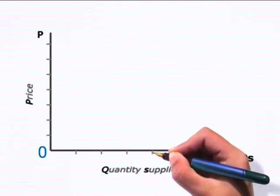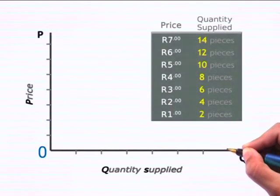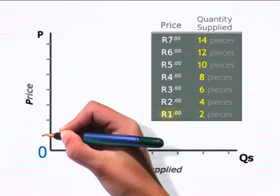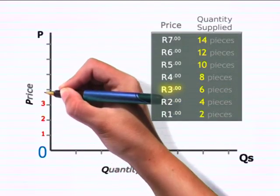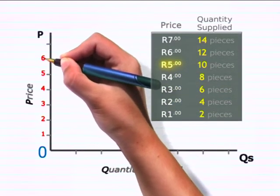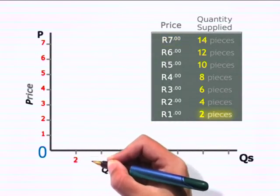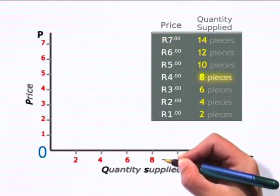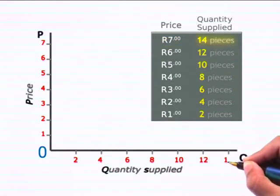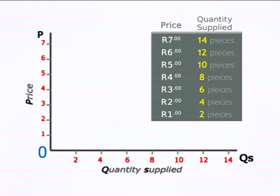Followed by the corresponding values from the table. That's one rand, two rand, three, four, five, six, and seven. And two pieces, four pieces, six, eight, ten, twelve, and fourteen.